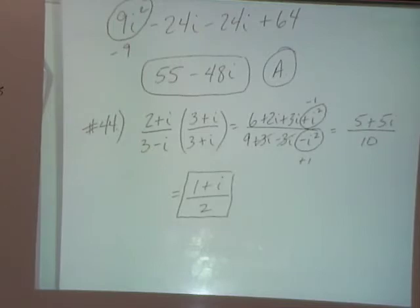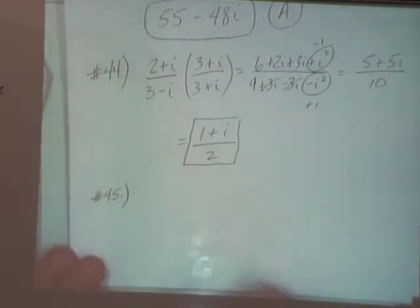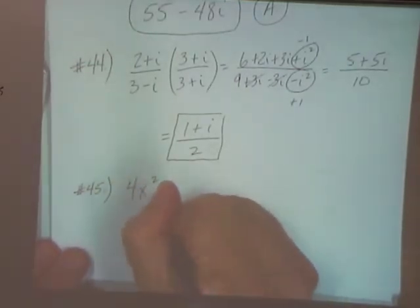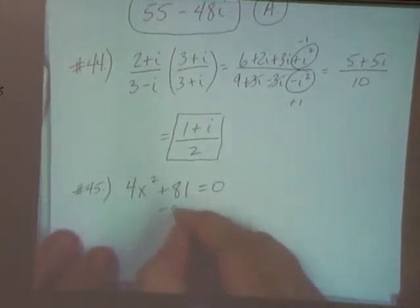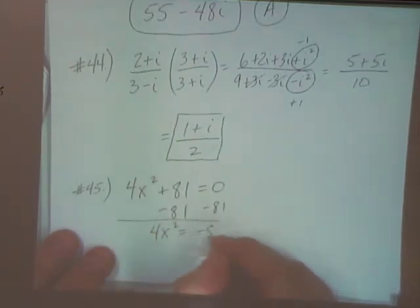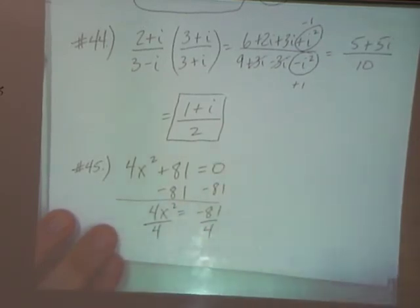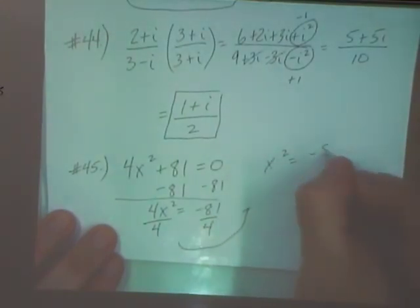Number forty-five. All right, it's a binomial. So I can go ahead and subtract eighty-one from both sides. Divide by four. So I end up with x squared equals negative 81 over four.